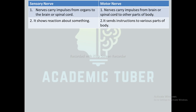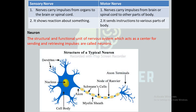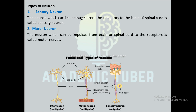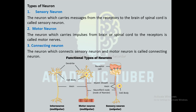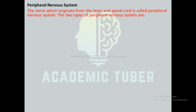A motor nerve sends instructions to various parts of the body. Neurons are the structural and functional units of the nervous system which act as centers for sending and receiving impulses. Types of neurons: sensory neurons carry messages from receptors to the brain or spinal cord; motor neurons carry impulses from the brain or spinal cord to receptors; and connecting neurons connect sensory neurons and motor neurons.